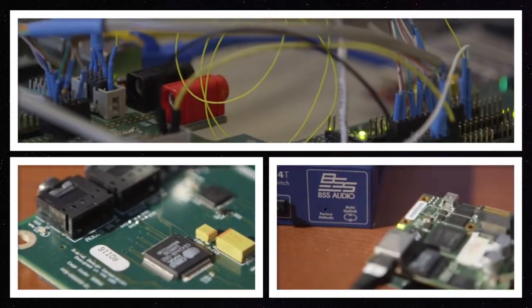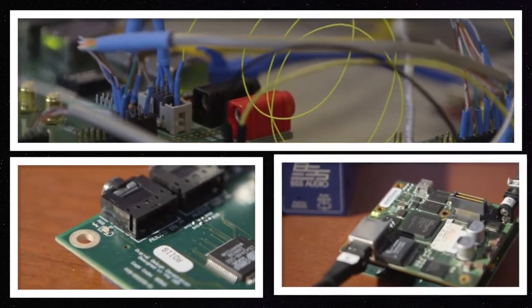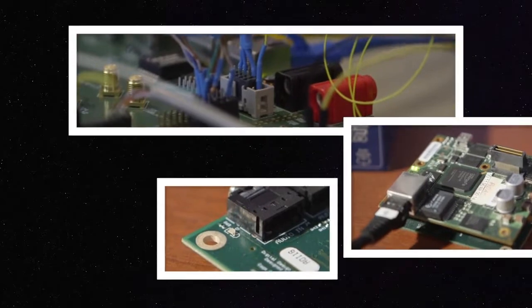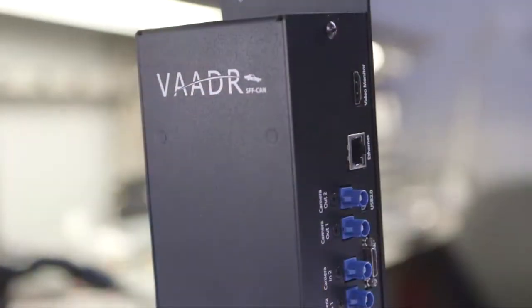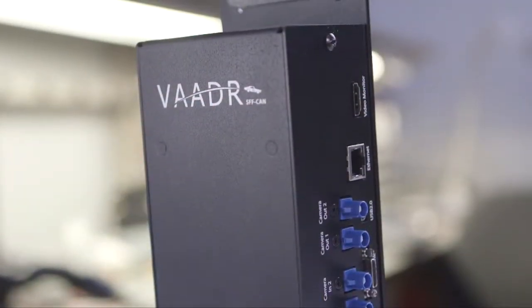AVB is audio-video bridging. AVB allows synchronization of audio and video in an ethernet network. That's needed because audio is small packets of data and video is big, and they have to be synchronized so that the audio matches the video.